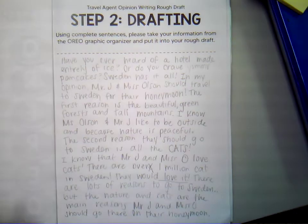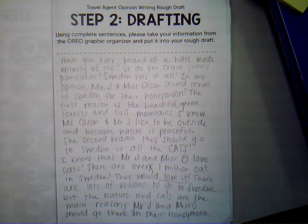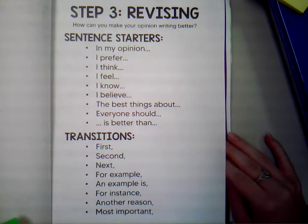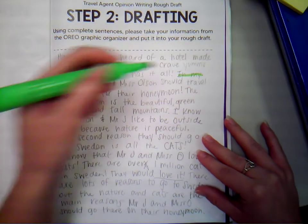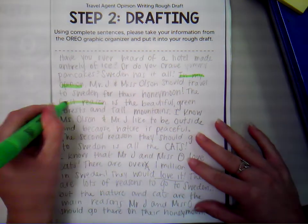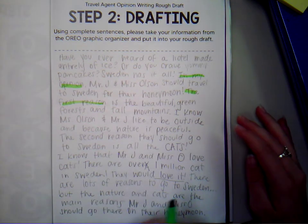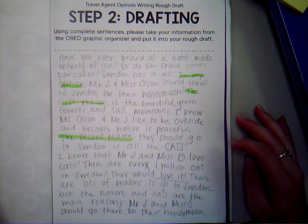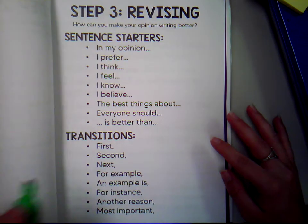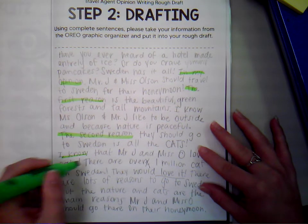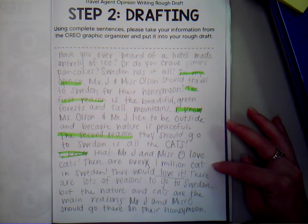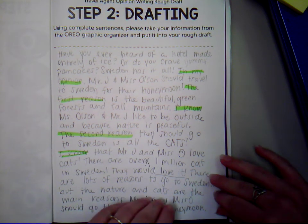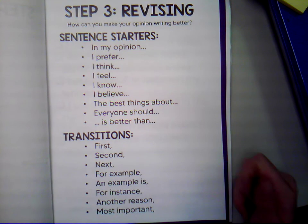I'm going to go back to my draft and grab a highlighter or a marker — whatever you have — and look to see how many of these sentence starters and transitions I already have in here. I can see I put 'in my opinion' up here, 'the first reason' right here, 'I know,' 'the second reason,' and another 'I know.' There are a lot of reasons to go to Sweden. So here is what I already have from the sentence starters and transitions list.